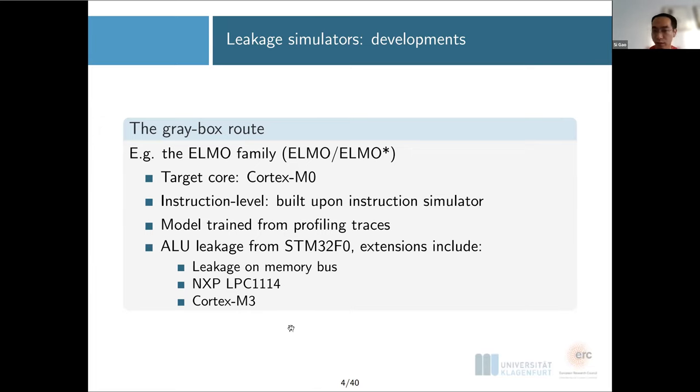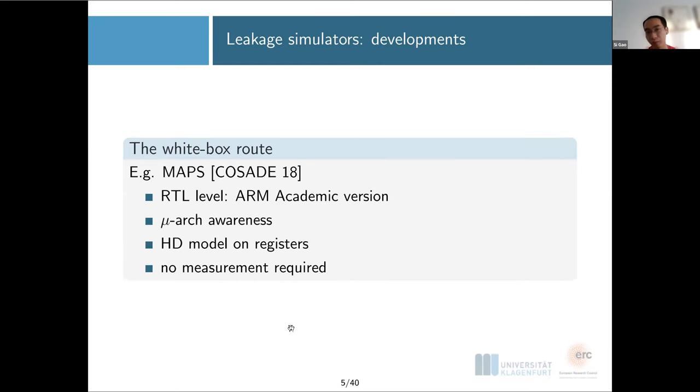There are extensions extending to non-ST cores, extending to another M0 core manufactured by NXP, and also an extension extending this to Cortex-M3. Or you can also choose the white box route. As a representative, MAPS takes the RTL code from ARM through an academic license. In this case, you actually get to see all the microarchitecture features. You know what's happening in your microarchitecture, and you don't really need any measurement because they decided to take the leakage as the Hamming distance on the registers.